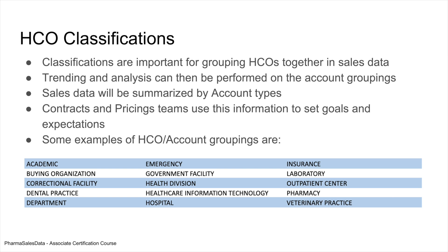HCO classifications — just like we had HCP classifications, we also have HCO classifications. Classifications are ways to group different things together. We want to group healthcare organizations by their class, sometimes called class of trade, sometimes just called classification. You'll see examples such as buying organizations, government facilities, and pharmacies. When we get into Rx data — prescription data — you'll see how this plays out based on how you group things in your HCO account buckets.